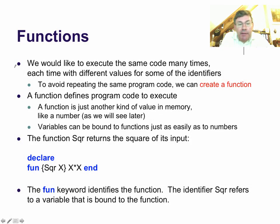To recapitulate, we would like to execute the same code many times, but each time with different values for some of the identifiers. In order to avoid repeating the same program code in the text of the program, we can create a function. A function defines some particular program code to execute. To be more precise, the way that a function is stored, it's stored like a value in memory. The program code is considered a value, just like a number.